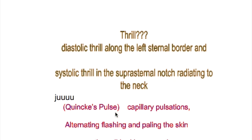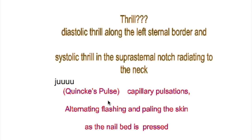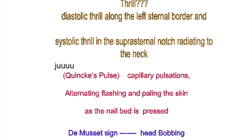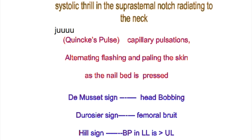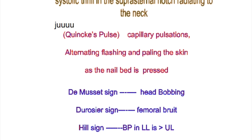Quincke's pulse refers to capillary pulsations — alternating flushing and paling of the skin as the nail bed is pressed. Other features of aortic regurgitation are de Musset's sign (head bobbing), Duroziez's sign, femoral bruit, and Hill's sign.